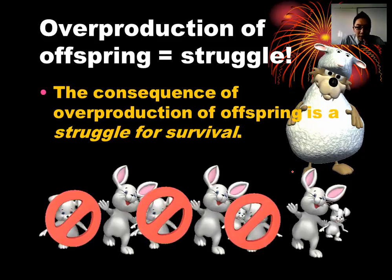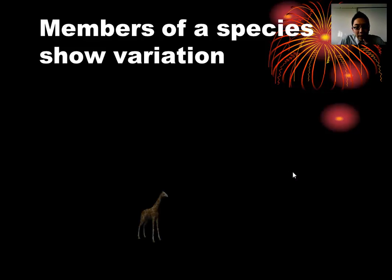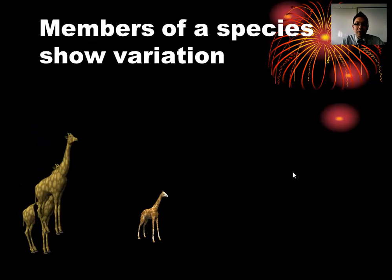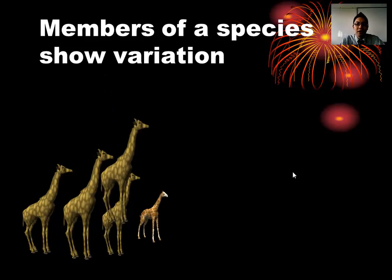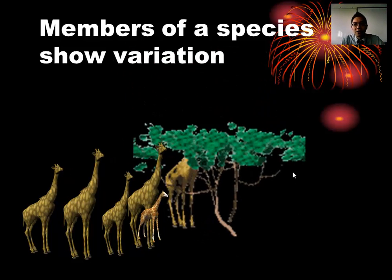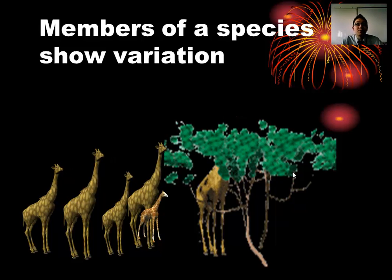Another important thing is that members of a species show variation. All those giraffes may look the same to you, but giraffes probably think all humans look exactly the same too. We know in our species that everybody is different — some are taller, some run faster, some have stronger immune systems. Even among giraffes there's variation coded in their DNA: some will grow taller, some will be faster, some more resistant to disease.